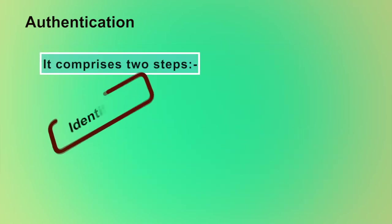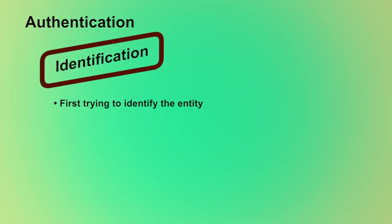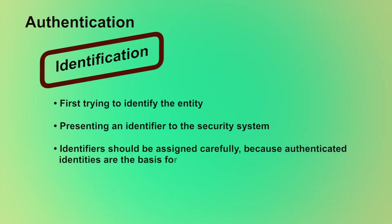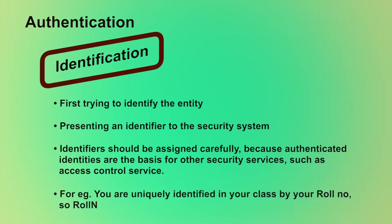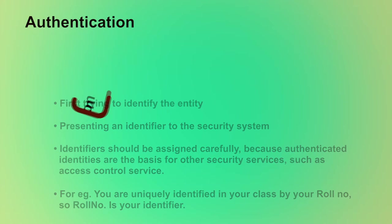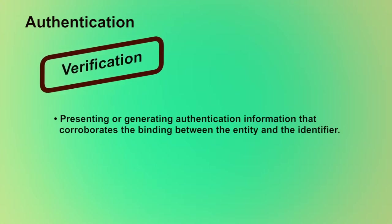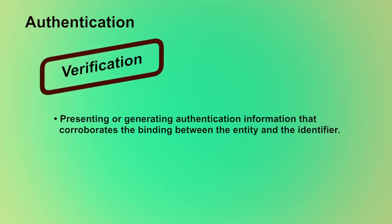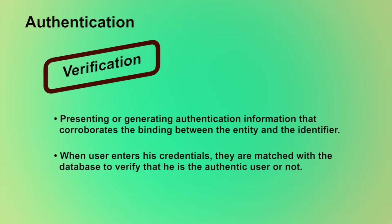An authentication process mainly comprises two steps: identification step and verification step. In the identification step, we first try to identify the entity by presenting an identifier to the security system. An identifier should be assigned carefully because authenticated identities are the basis for other security services such as access control. For example, you are uniquely identified in your class by your roll number — so roll number is your identifier. The verification step involves presenting or generating authentication information that corroborates the binding between the entity and the identifier. When a user enters his credentials, they are matched with the database to verify that he is the authentic user.